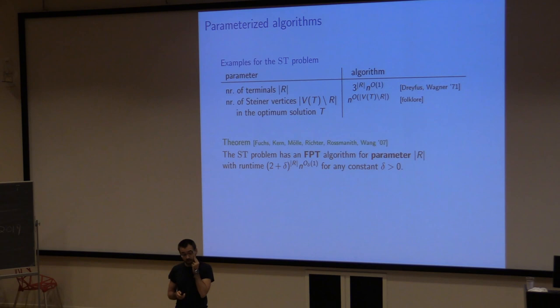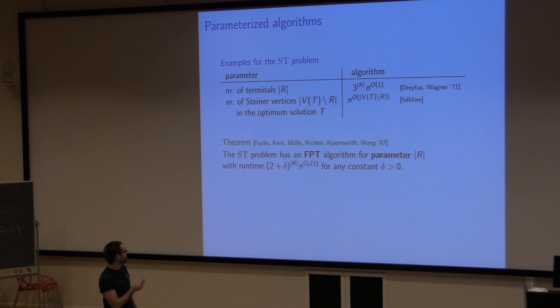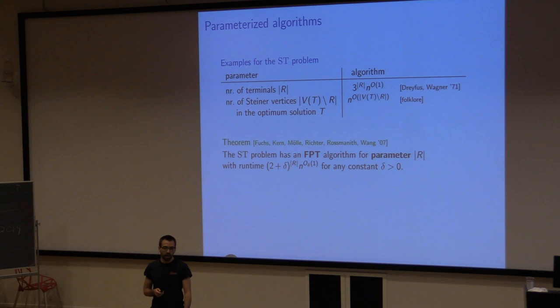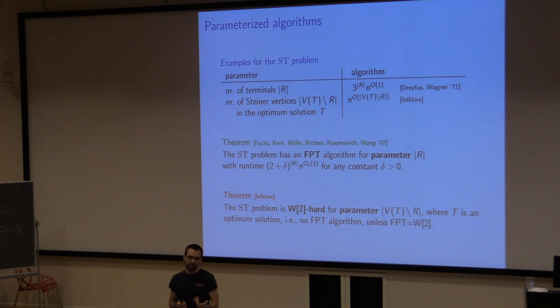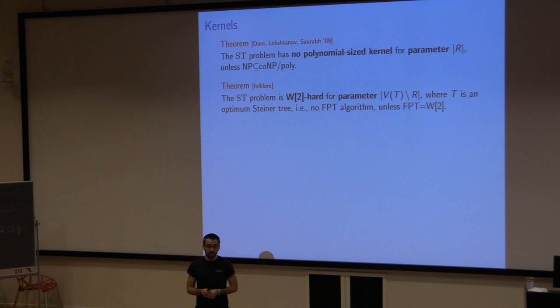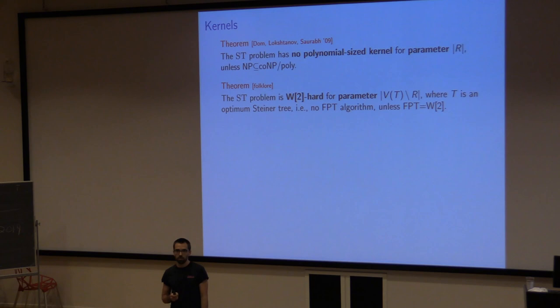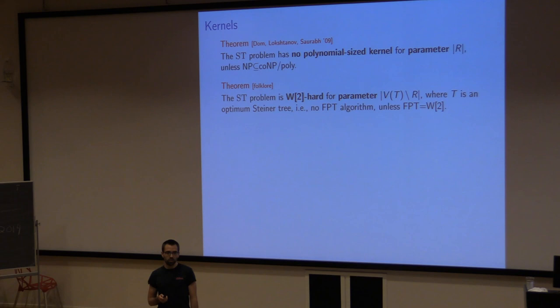Can we do better? The Dreyfus-Wagner algorithm has a faster version where the base of the exponent can be arbitrarily close to 2. For the other parameter, the problem turns out to be W-hard, so we cannot really hope for an FPT algorithm. If we look at the parameter number of terminals, there is no polynomial-sized kernel, and for the number of Steiner vertices it's W2-hard, so there is no kernel whatsoever.